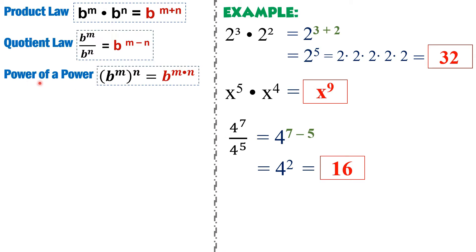Next is power of a power. If an exponential expression is raised to another exponent, what you have to do is multiply their exponents. For example, we have 2 cubed raised to 2. So 2 already has an exponent of 3, but it is raised again to another exponent. This case is different from the product law, since in the product law both expressions share the same base of 2. Here, you multiply the exponents.